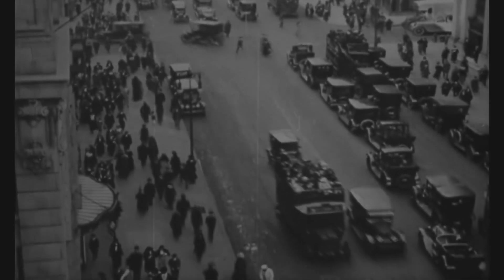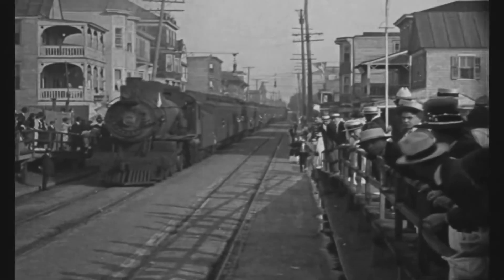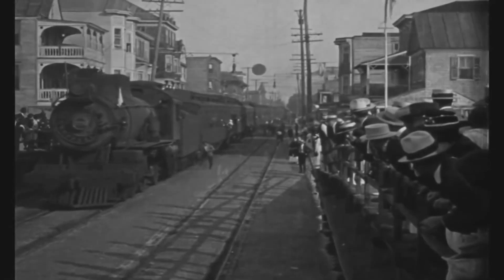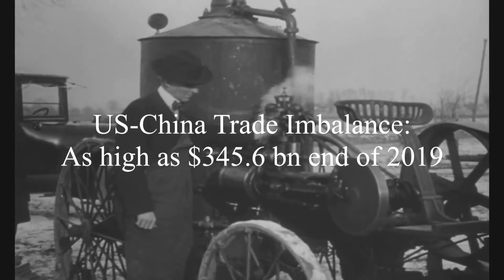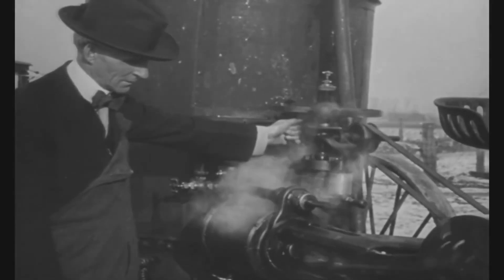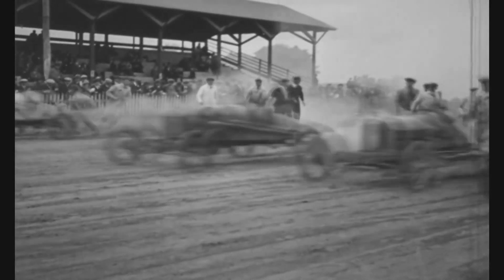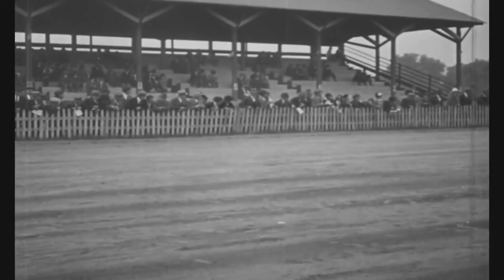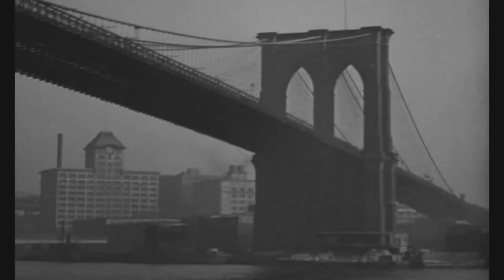It is well known that the rise of China poses a threat to the global hegemony of the United States. Upon being elected in 2016, Donald Trump made it clear that his time as president would see the challenge of China answered. Trump saw the trade imbalance between the two countries, which was as high as $345.6 billion in 2019, as a considerable problem. This video aims to explain precisely why the issue is much worse than people think, and why Trump's attempts to reduce the current account deficit have been completely unsuccessful.